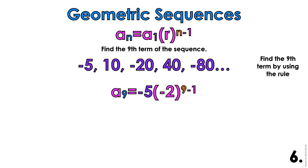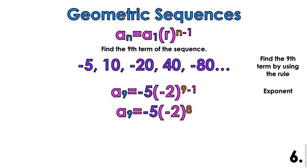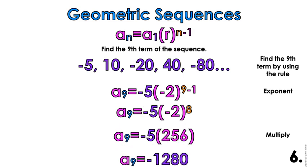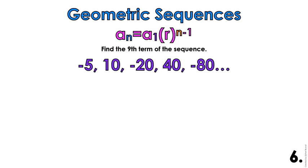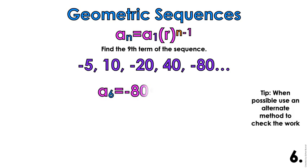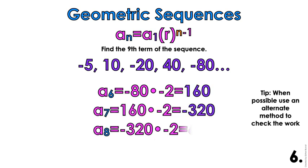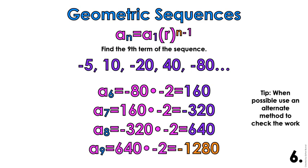Plug in: a sub 9 equals negative 5 times negative 2 to the power of 9 minus 1. Negative 5 is a sub 1, negative 2 is the common ratio, 9 is the position, and the minus 1 is always in the explicit formula. Simplify: 9 minus 1 is 8, negative 2 to the 8th power gives positive 256, and 5 times 256 gives negative 1280. You could also check by multiplying each term by negative 2 until you reach a sub 9.